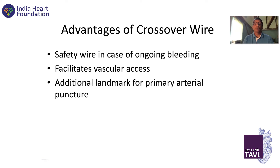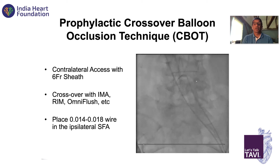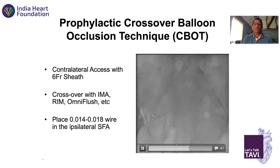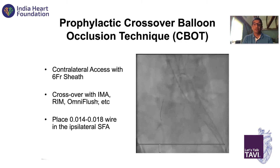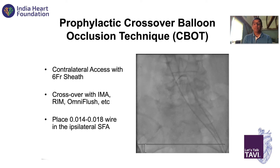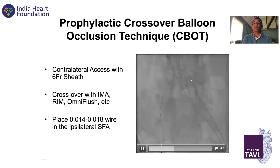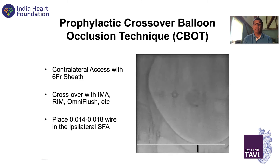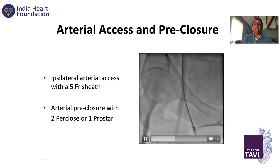For people that don't do a lot of femoral or peripheral intervention, it allows them to gain wire skills in peripheral intervention. And for access, it gives you an additional landmark for your arterial puncture. We have a six French contralateral, and we put an 014 wire through the six French contralateral down into the SFA. I cross over with an IMI — you can use whatever you want: omni-flush, rim catheter. I leave that coming out of the sheath and put my five French pigtail for angiography through that same six French sheath. It gives you another landmark when you're sticking fluoroscopically.